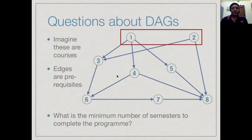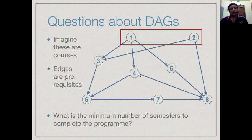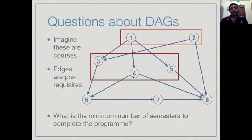We can start by doing courses 1 and 2 in the first semester because they have no prerequisites. Having done 1 and 2, we can do course 3 in the second semester since it depends only on 1 and 2. Similarly, we can do 4 and 5 because they depend only on 1. So in the second semester we can do 3, 4, and 5.